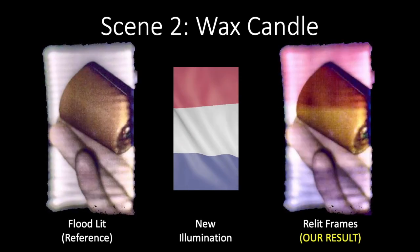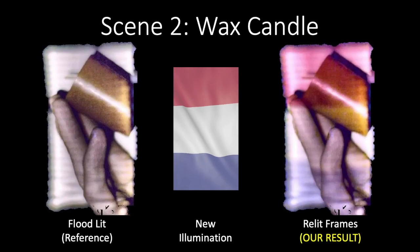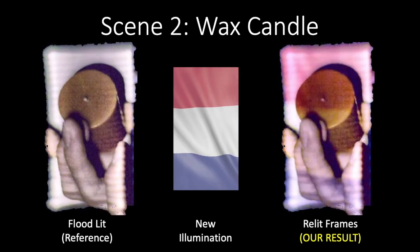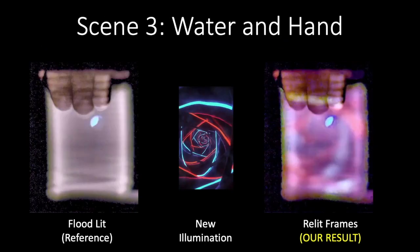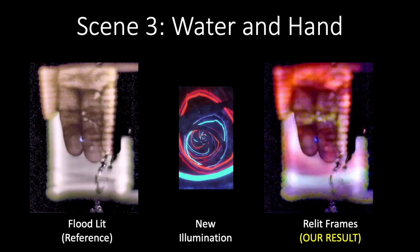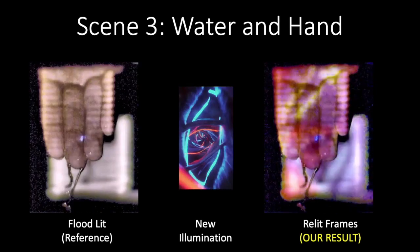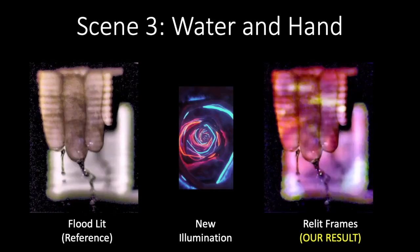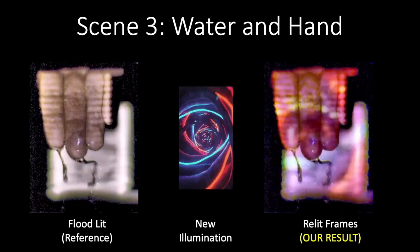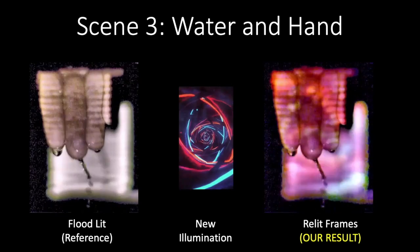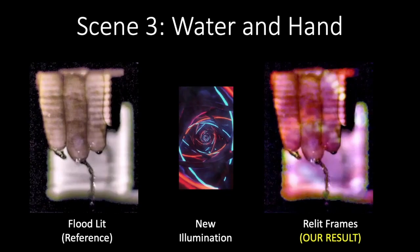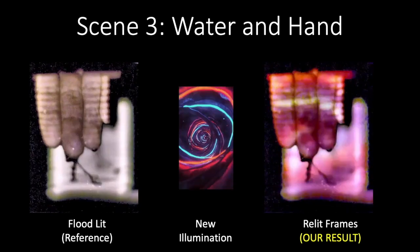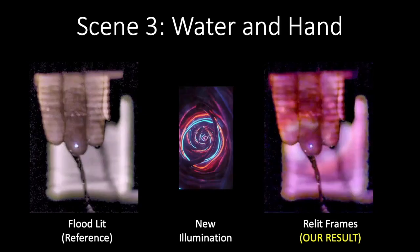Note the change in color of the fingers and the candle at the color boundaries. Here we show water streaming over a hand, showing droplets falling that are illuminated by the projector. The hand and droplets are in focus, but the background is out of the depth of field. We encourage the reviewer to pause and see the relighting in the droplets themselves.